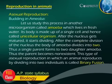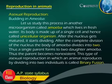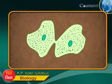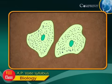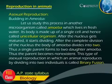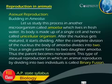Let us study this process in another microorganism called amoeba, which lives in fresh water. Its body is made up of a single cell and hence is called a unicellular organism. After the nucleus gets matured, it starts dividing. After the complete division of the nucleus, the body of amoeba divides into two, and thus a single parent forms two daughter amoeba. The parent becomes non-existent. This type of asexual reproduction, in which an animal reproduces by dividing into two individuals, is called binary fission.